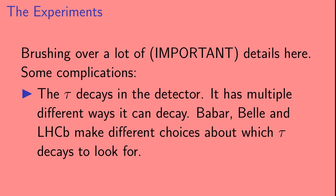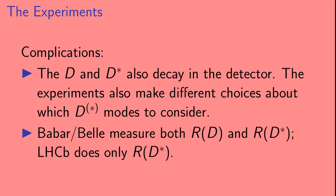Here I'm brushing over a lot of very important details. So I'm going to briefly mention some complications here. The tau lepton actually decays in the detector. It has multiple different ways that it can decay. And Babar, Belle, and LHCb make different choices about which tau decays to look for in their detector. Also, the D and D star also decay in the detector. The experiments also make different choices about which D and D star modes to consider in their experiments.